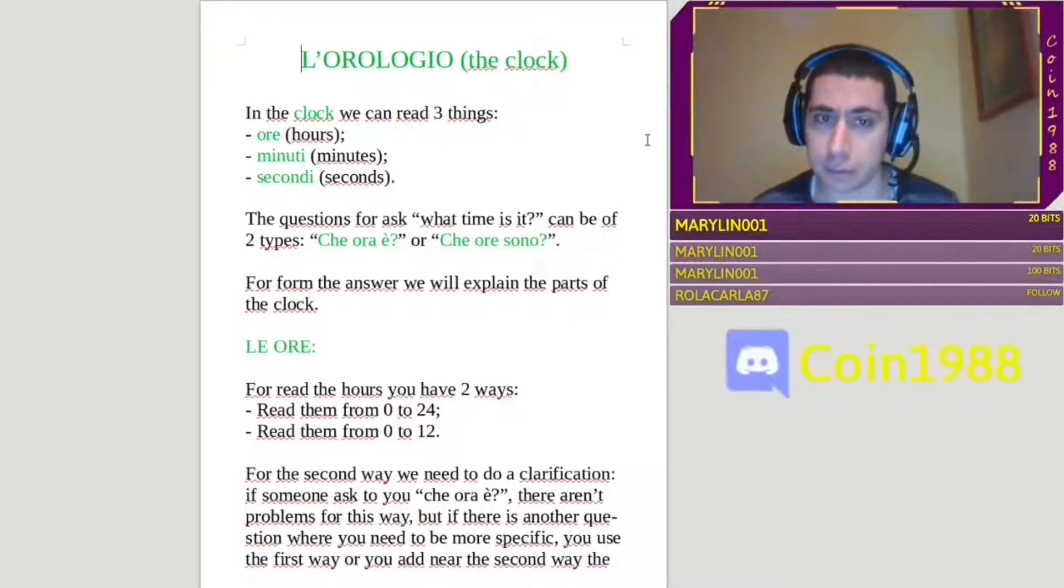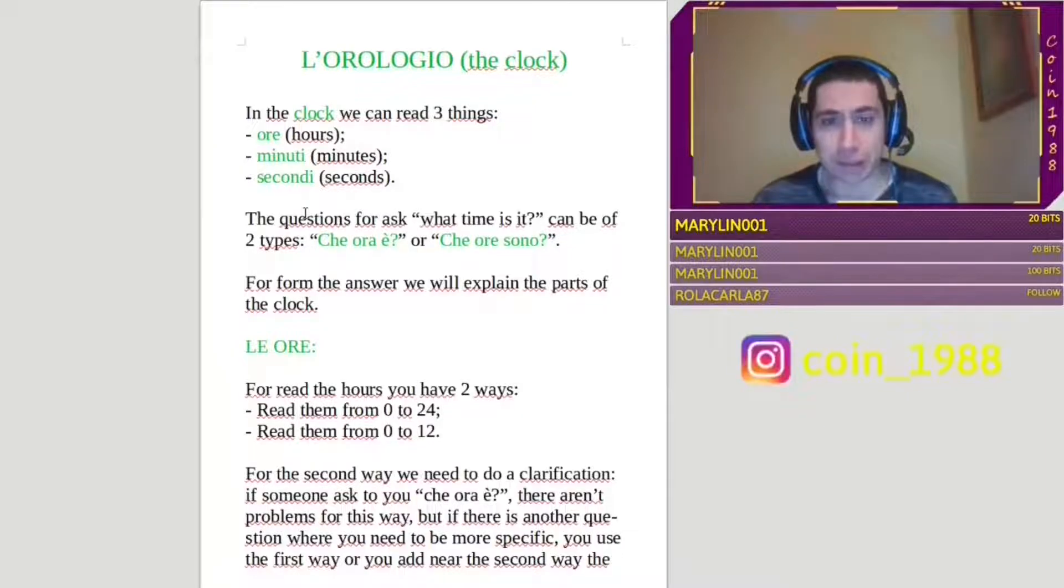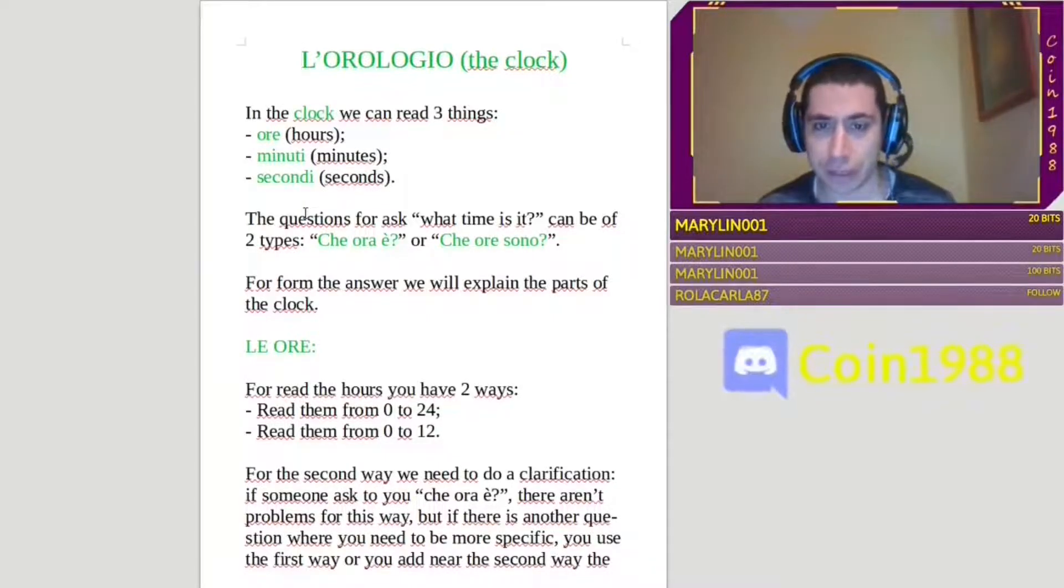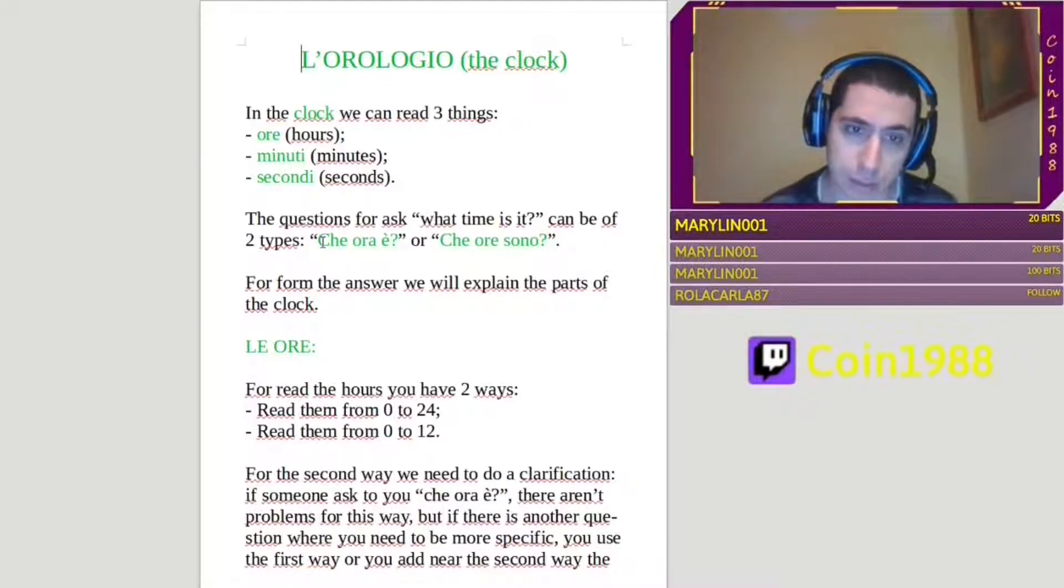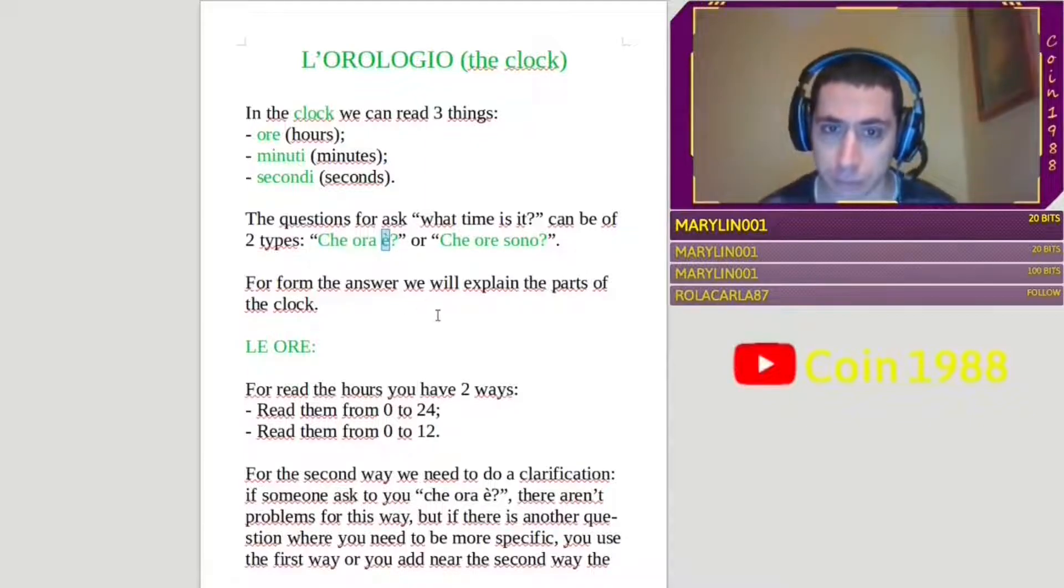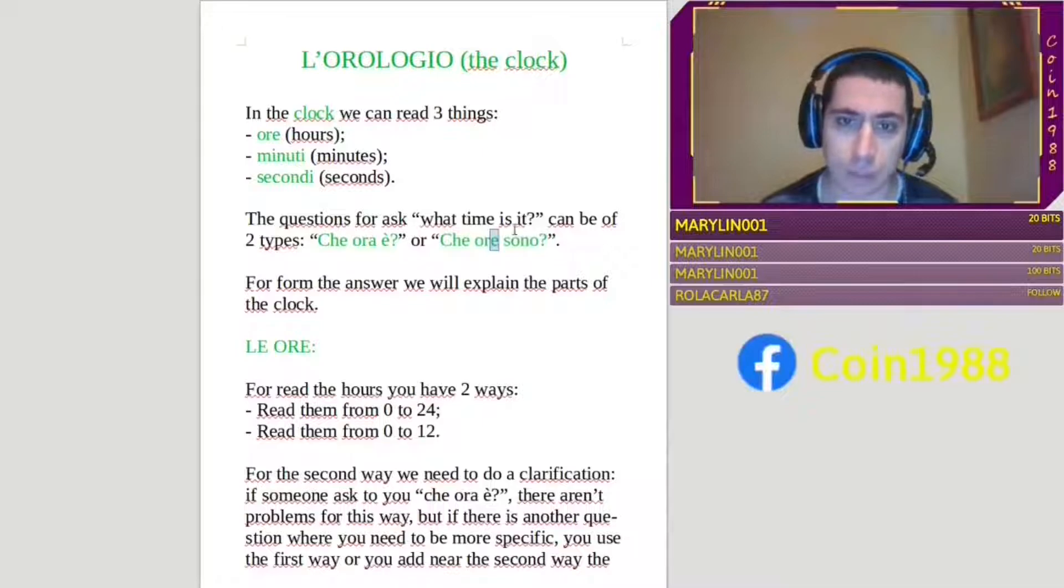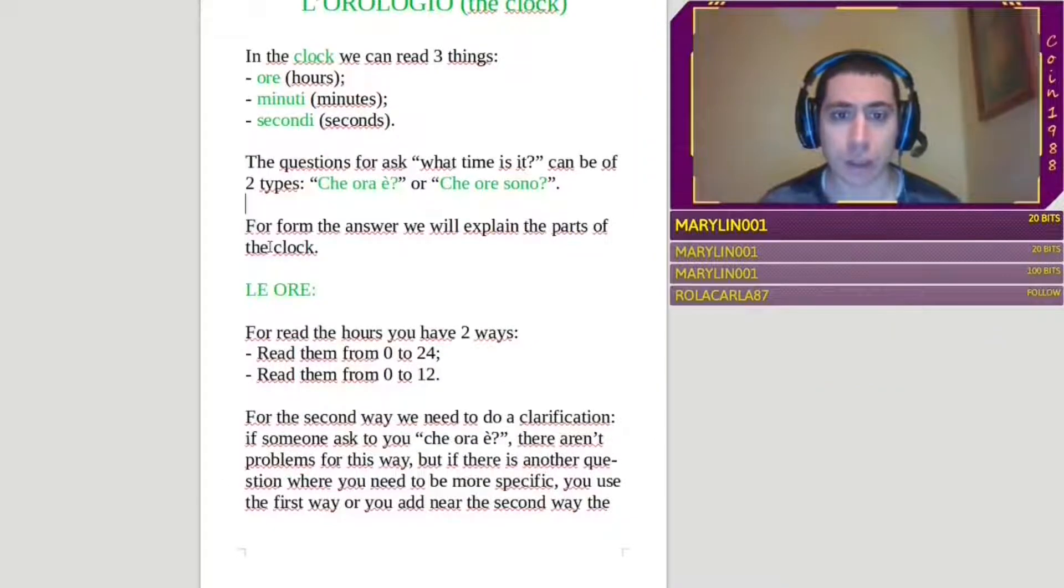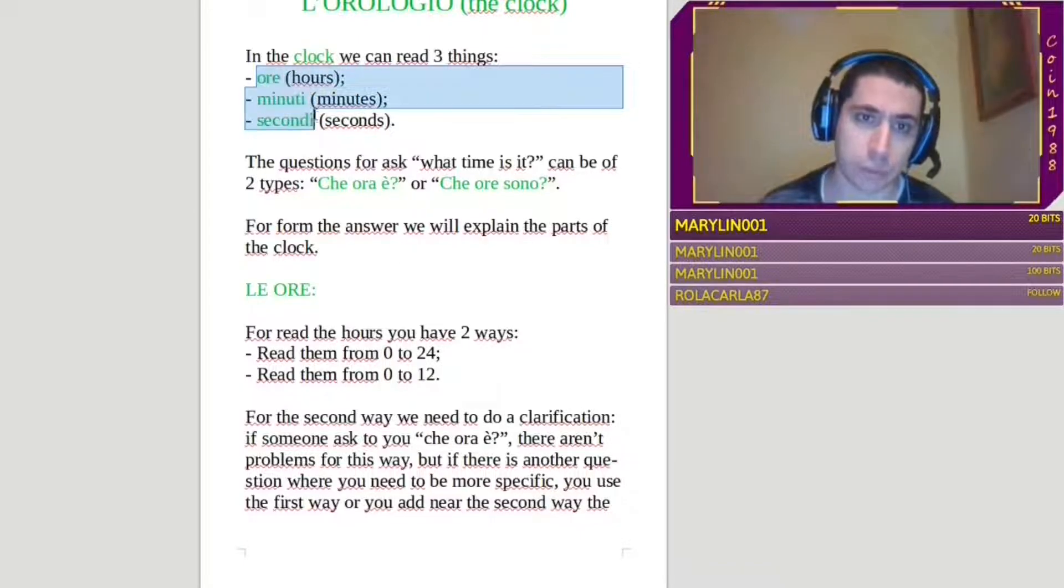In the clock we can read three things. Ore is hours, minuti that are minutes, secondi that are seconds. The questions for ask what time is it can be in Italian of two types: che ora è and che ore sono. Both of them is what time is it. The difference is that this is at singular, che ora è, ora is singular and è is the singular of the verb to be. Che ore sono is plural, in fact ore is plural, and sono is the plural of the verb to be. For form the answer we will explain the parts of the clock, that are ore, minuti and secondi.